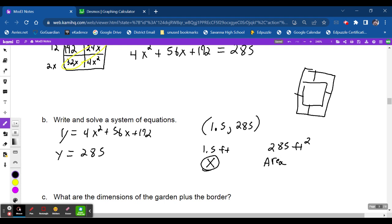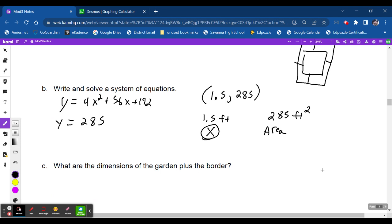So it asks, what are the dimensions of our garden plus the border? Well, I know it's 12 by 16, but it's not. It's 12 plus 2x by 16 plus 2x. And 2 times 1.5 is 3. So I'm going to have 15 feet by 19 feet.